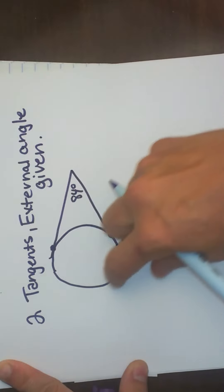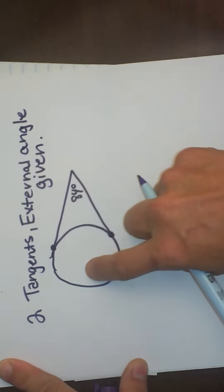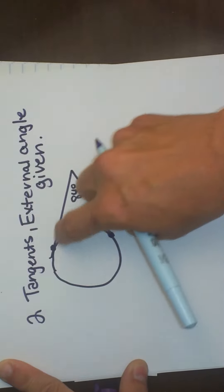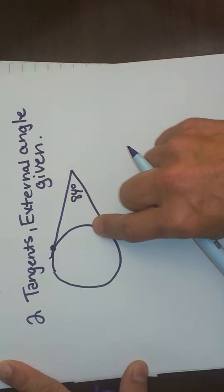One thing you know is a circle adds to 360. We don't know either arc but we know we have tangents so we know that the two arcs have to add up to 360 degrees.